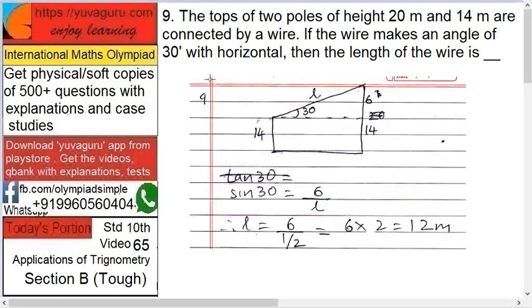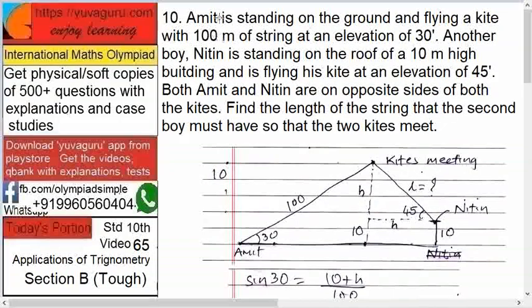Next, Amit is standing on the ground and flying a kite with 100 meters of string at an elevation of 30 degrees. Another boy, Nitin, is standing on the roof of a 10-meter high building and is flying his kite at an elevation of 45 degrees.